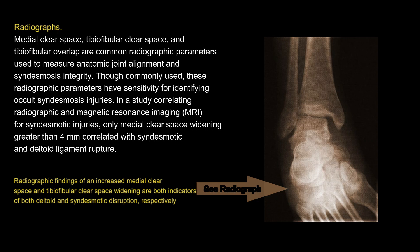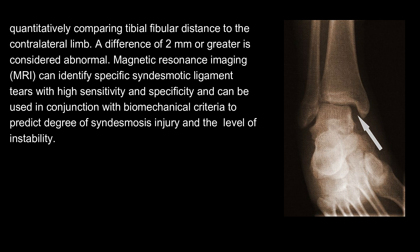Radiographs: Medial clear space, tibiofibular clear space, and tibiofibular overlap are common radiographic parameters used to measure anatomic joint alignment and syndesmosis integrity. Though commonly used, these radiographic parameters have limited sensitivity for identifying occult syndesmosis injuries. In a study correlating radiographic and MRI findings for syndesmotic injuries, only medial clear space widening greater than 4 mm correlated with syndesmotic and deltoid ligament rupture. Radiographic findings of increased medial clear space and tibiofibular clear space widening are indicators of deltoid and syndesmotic disruption, respectively. Quantitatively comparing tibiofibular distance to the contralateral limb, a difference of 2 mm or greater is considered abnormal.